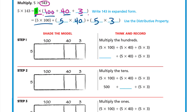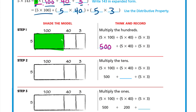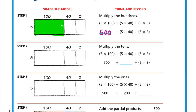Let's first do 5 times 100. So 5 times 100 — 5 times 1 is 5, and we write the two zeros — equals 500. Plus 5 times 40.